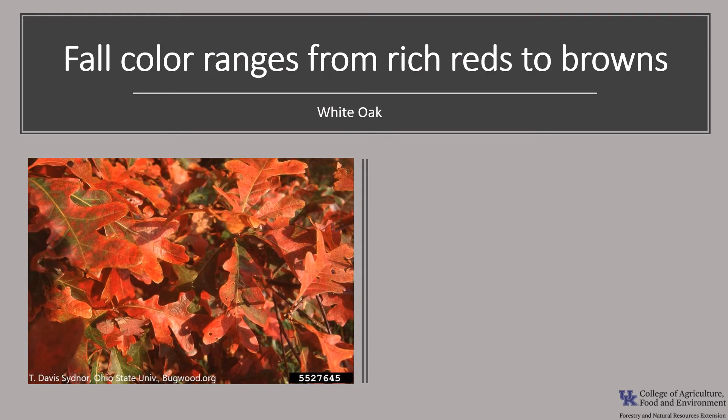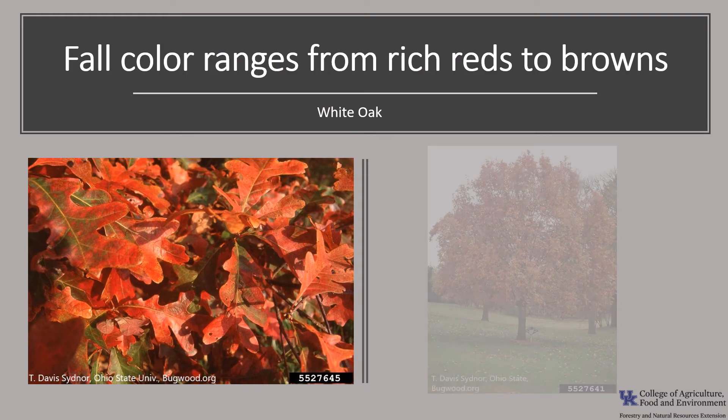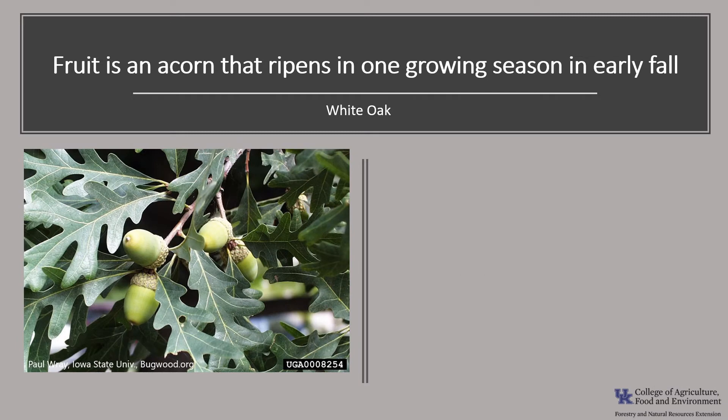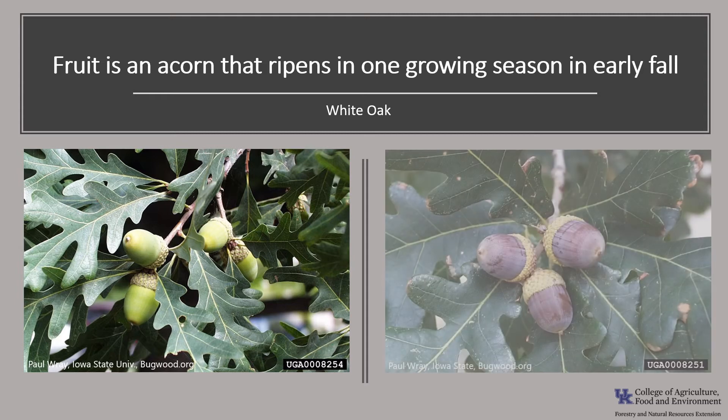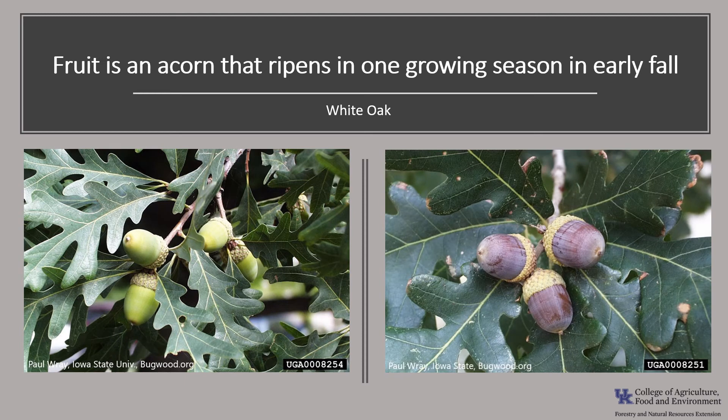The fall color is usually attractive, ranging from a rich red to a reddish brown. The fruit of the white oak is an oblong acorn with a warty bowl-shaped cap; the cap detaches at maturity. As the acorn matures it changes color from green to brown. Acorns mature in one growing season and germinate almost immediately after falling to the ground in September to October. White oak can produce seed prolifically, but good acorn crops are irregular, occurring only every four to ten years. Trees normally bear seeds between the ages of 50 and 200 years.